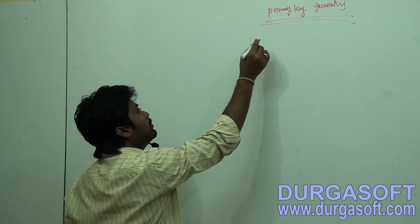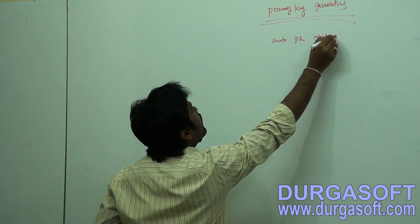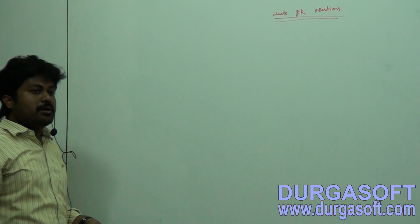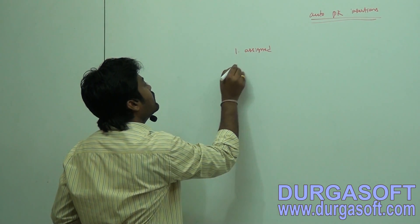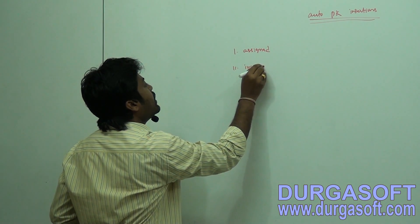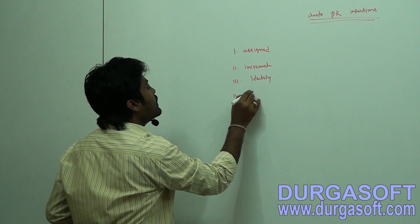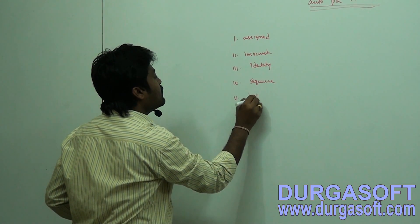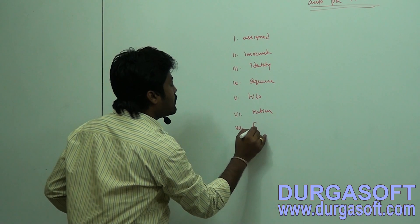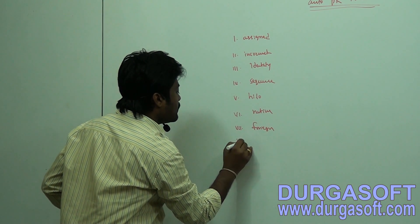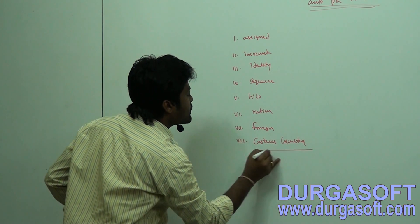Using primary key generators, we can do auto primary key value insertions. This auto primary key insertion can be done by using many approaches: assigned, increment, identity, sequence, Hilo, native, foreign, and custom generators.